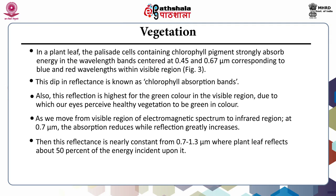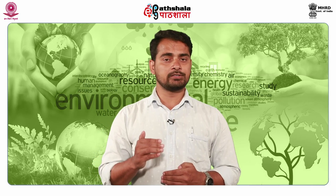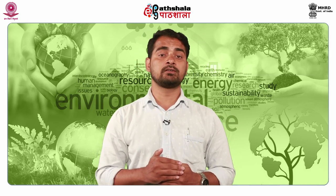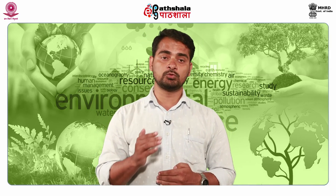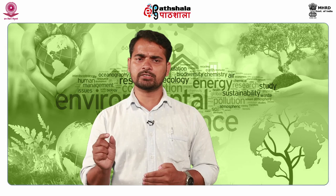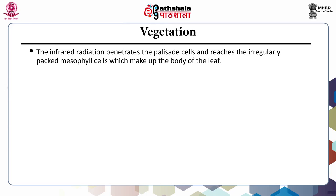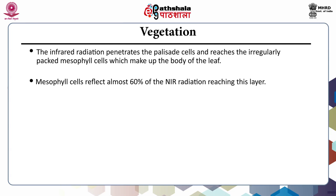The absorption greatly reduces and reflection increases at the red-infrared boundary near 0.7 micrometer. The reflectance is nearly constant from 0.7 to 1.3 micrometer and then decreases at longer wavelengths. In the near-infrared portion of the spectrum at 0.7 micrometer, the reflectance of healthy vegetation increases dramatically. In the range from 0.7 to 1.3 micrometer, a plant leaf reflects about 50% of the energy incident upon it. Mesophyll cells reflect almost 60% of near-infrared radiation reaching that layer.